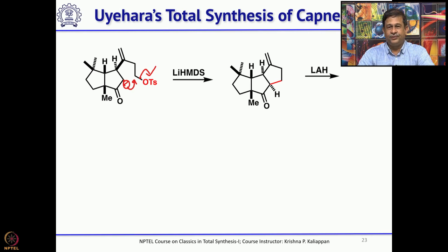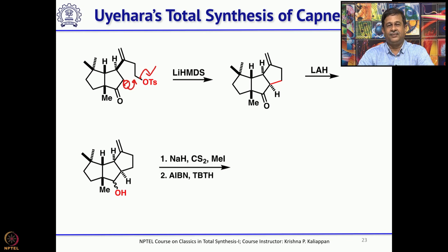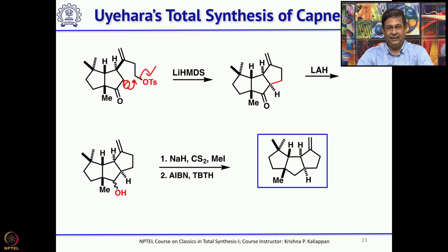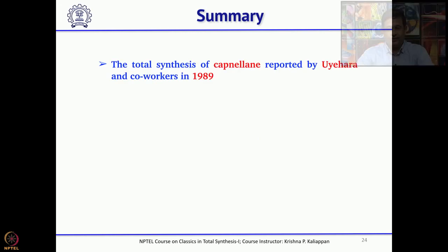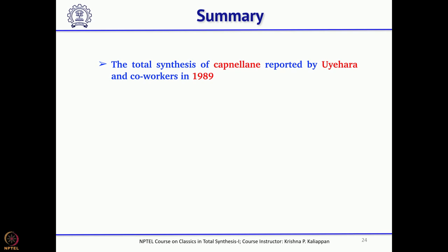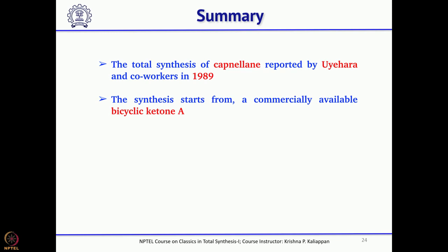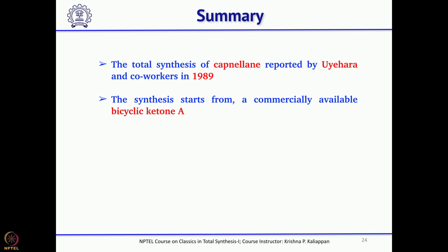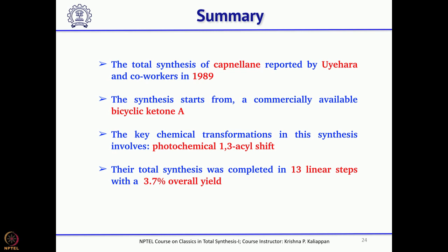What remains is to remove the ketone. The ketone is reduced to an alcohol, converted to a xanthate using sodium hydride, carbon disulfide, and methyl iodide — the OH is converted to the xanthate. The xanthate is then reductively cleaved using tributyltin hydride and AIBN. To summarize: Oyehara and Shinari-Imamoto's total synthesis of capnelline started with commercially available metaacresyl methyl ether, used Birch reduction, conjugation, and Diels-Alder reaction to get the bicyclic 2.2.2 octanone, then the key 1,3-acyl shift under photochemical conditions. Overall, 13 longest linear steps with about 3.7% overall yield.